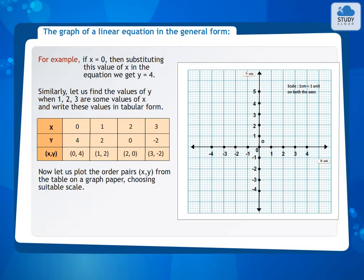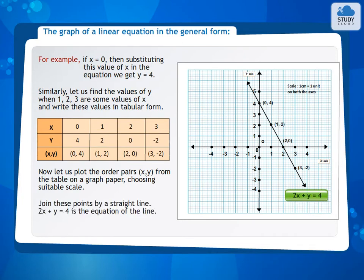Now let us plot the ordered pairs (x, y) from the table on graph paper, choosing suitable scale. Join these points by a straight line. 2x plus y equals 4 is the equation of the line.